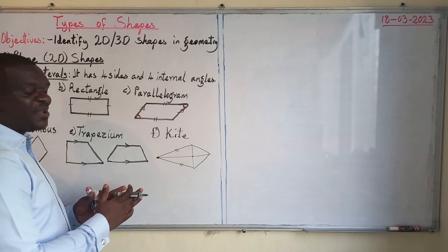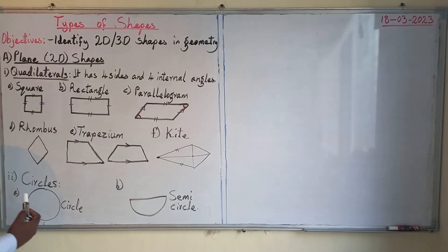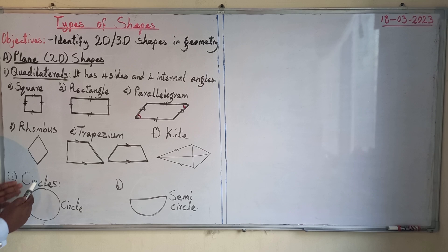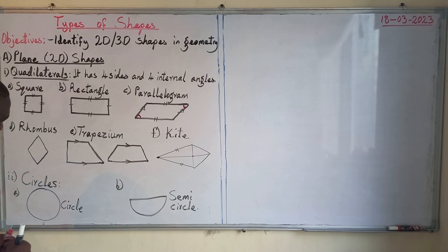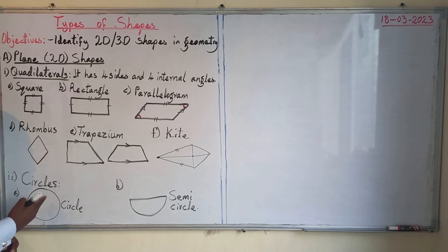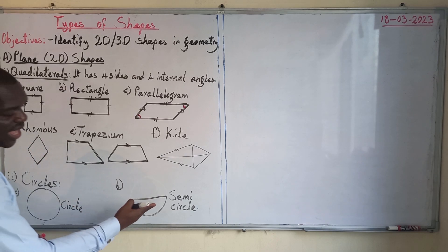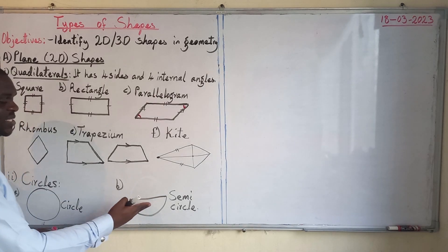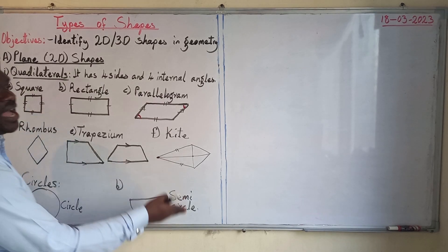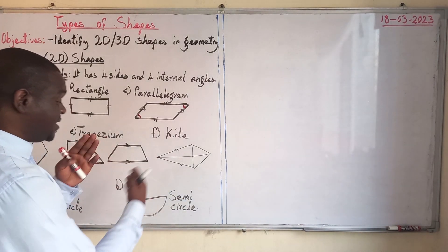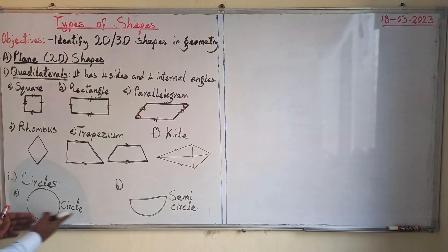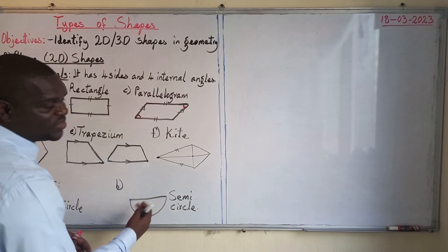The next type of plane shapes are circles. As we saw in our last lesson, a circle has a total of 360 degrees. We also have a semicircle — a semicircle is half of a circle, so its angle is 180 degrees.